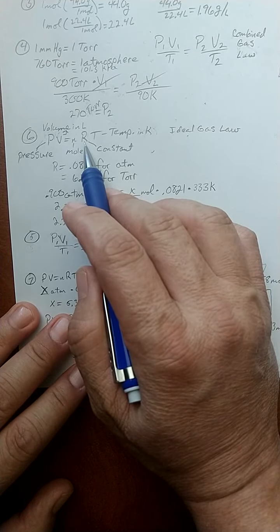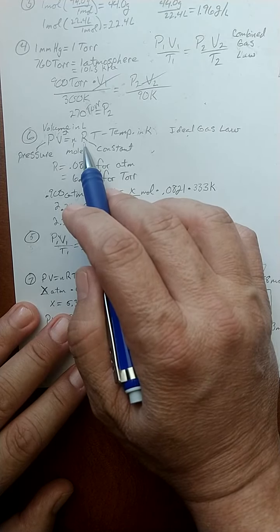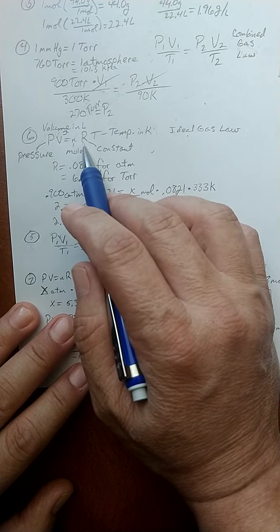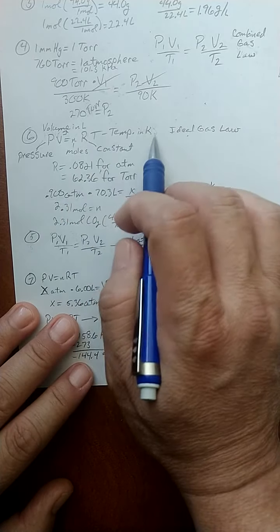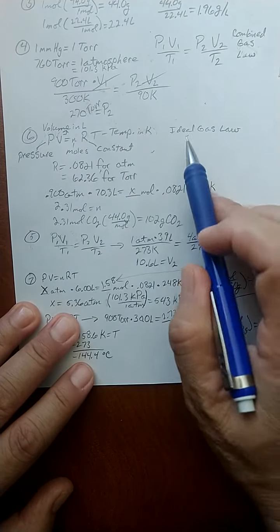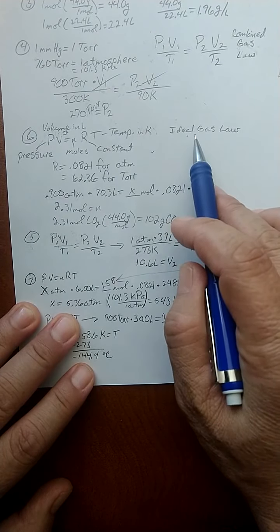R is named for a French scientist whom I forget. Why would the constant be called R? Because of this dude. Sorry, I don't remember. And T is temperature, and it must be in Kelvin, or this doesn't work. And this is called our ideal gas law.